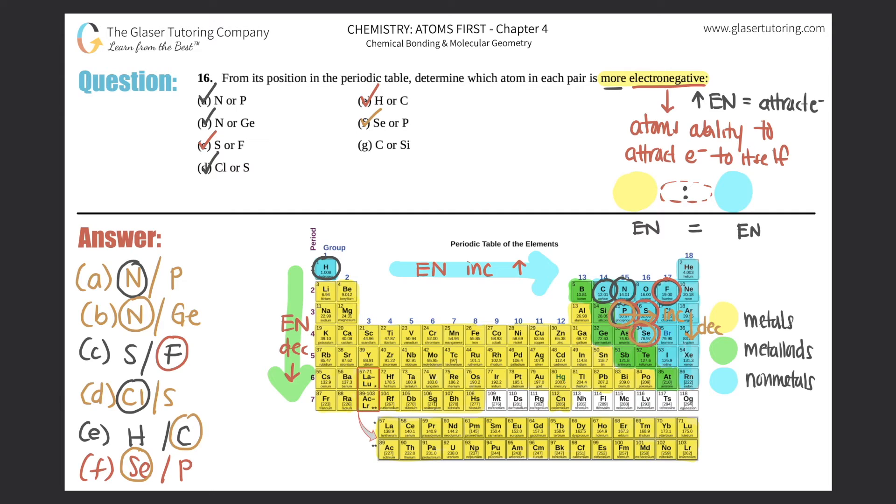And then last but not least, we have G, carbon or silicon. Carbon is up top here. Let me just put it into a different color. Carbon's over here. Silicon is over here. As you go down, electronegativity decreases. So that means that carbon up top would have more electronegativity. So that would be that guy. And that one's done.